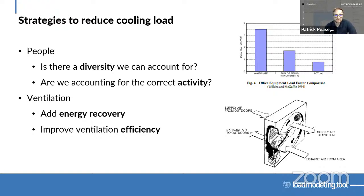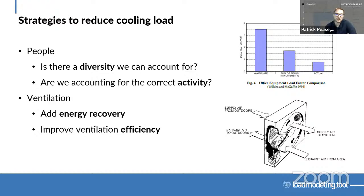For ventilation, number one — very common in most codes now — is to add energy recovery. By adding energy recovery, we're essentially transferring heat from the already-conditioned air in the building to the incoming outdoor air, and we can save a lot of load that way. Another more nuanced approach is to look at ventilation efficiency under ASHRAE 62.1's ventilation rate procedure. If we can adjust the design to have a better ventilation efficiency — for example, delivering air more effectively to occupants — we can actually reduce the outdoor air required to be delivered, thus reducing the ventilation load.